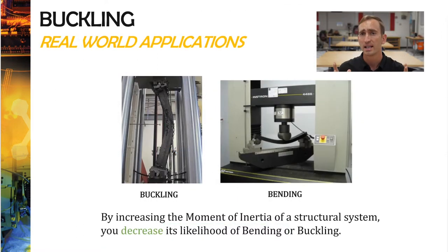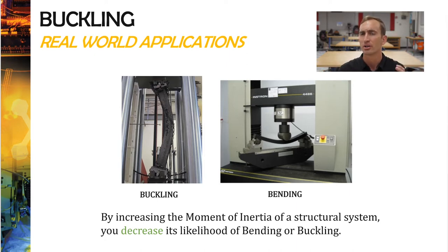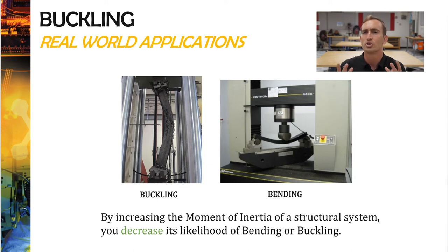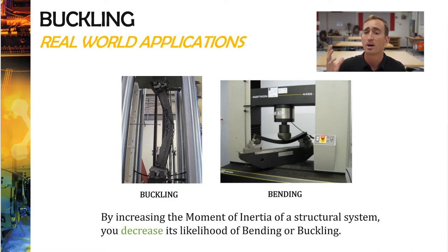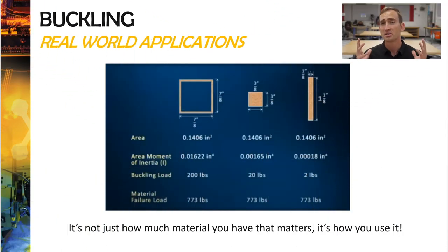The way to make that concrete column less susceptible to buckling would be to increase the moment of inertia of that system. Because Young's modulus is going to remain the same, and if we wanted to keep the length the same, the only thing we could really change is the moment of inertia. By increasing the moment of inertia, we can increase the force needed to buckle something and make it much stronger. This is true for both buckling and bending.